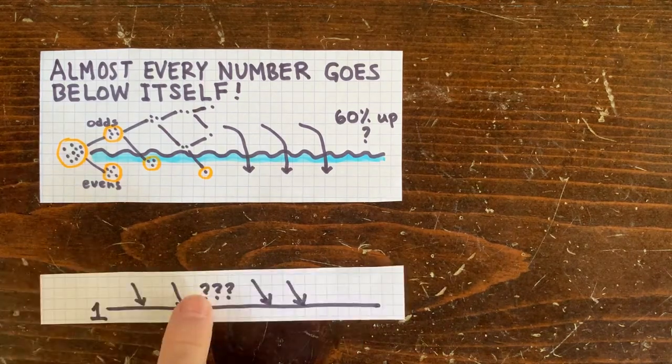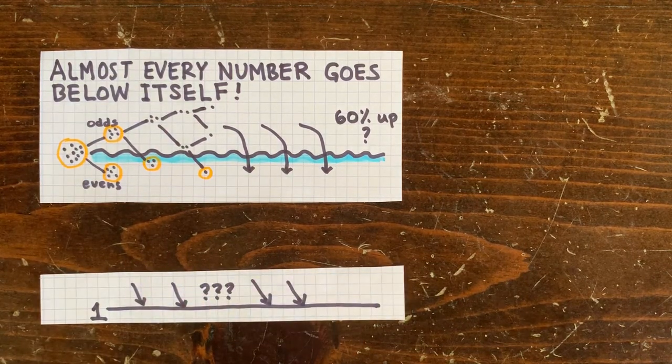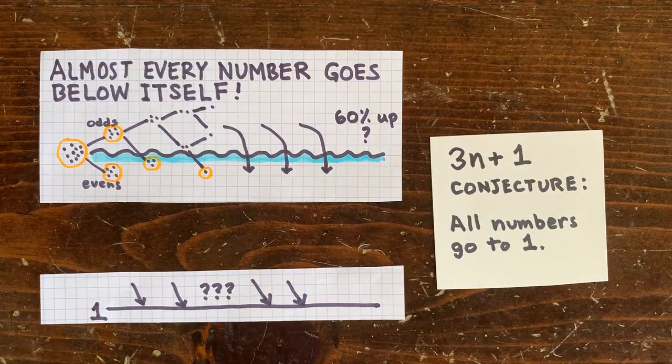We didn't talk yet about how many numbers go all the way to 1. The 3n plus 1 conjecture says they all do. Maybe, maybe not.